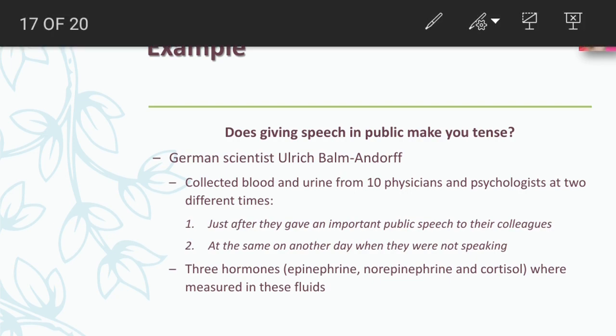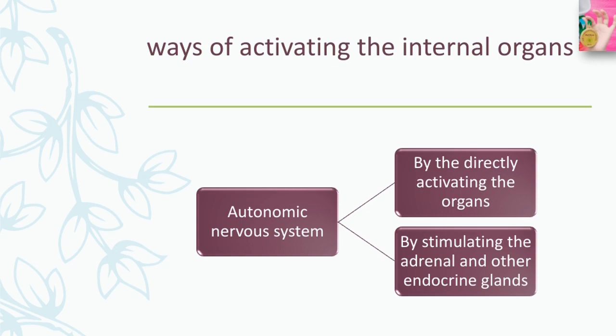The autonomic nervous system has two ways of activating the internal organs: first, by directly affecting the organ, and second, by stimulating the adrenal and other endocrine glands, which then influence the organs with their hormones. One reason it takes so long to feel calm after a stressful event has passed is because of this second route — it takes quite a while for the hormones to leave the bloodstream, so their effects are rather long-lasting.